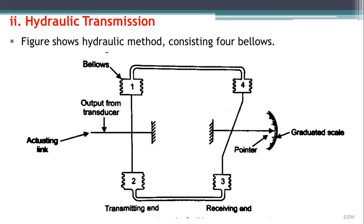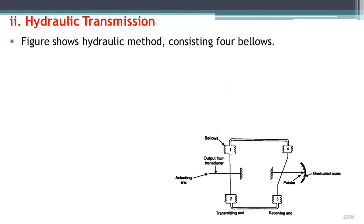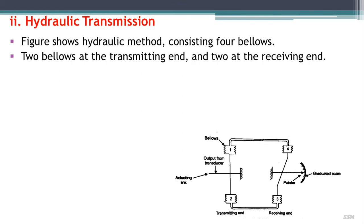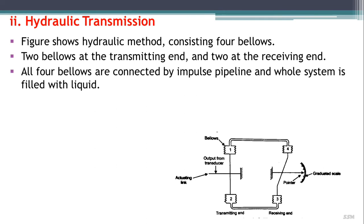Next is hydraulic transmission. The figure shows the hydraulic method consisting of four bellows: two bellows at the transmitting end and two bellows at the receiving end. At the transmitting end, the output from the transducer is used as an actuating input, and the output or receiving end is connected with a pointer. All four bellows are connected by an impulse pipeline, and the whole system is filled with liquid.